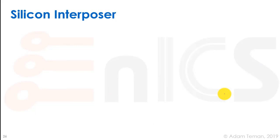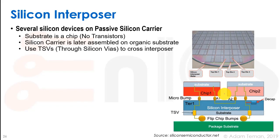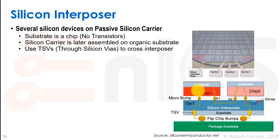The newer and better approach is called a silicon interposer. In this case, we take several silicon devices and place them on a passive silicon carrier — essentially fabricating a package where the substrate itself is a chip. This silicon interposer contains routing tracks that enable connections between chips, and the silicon carrier is assembled on an organic substrate. TSVs, or through-silicon vias, connect between the different chips and the substrate.